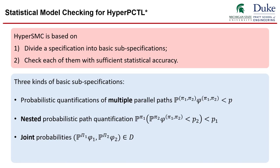Based on the syntax and semantics of the hyper PCTL star, there are three kinds of basic subformulas that we need to deal with. Probabilistic quantification of multiple parallel paths, nested probability path quantification, and joint probabilities. For all these subformulas, we developed new statistical inference methods based on sequential probability ratio tests to verify them with sufficient statistical accuracy.